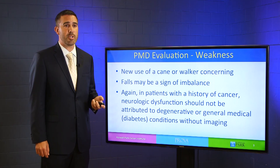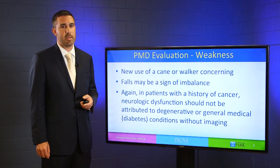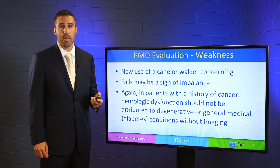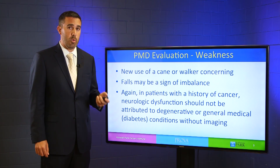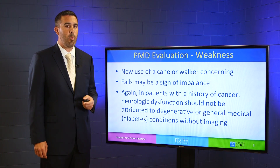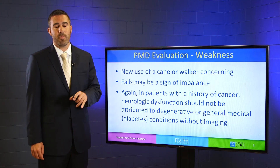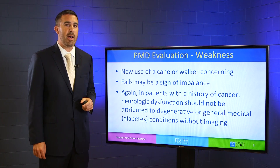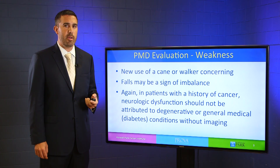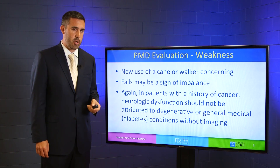The typical progression if untreated in patients with spinal metastatic disease is: first they have some imbalance, then they use a cane, then a walker, and then they're in a wheelchair. We want to identify these patients as early in that course of progression as possible so that we can prevent further neurologic deterioration and preserve their current level of neurologic function.